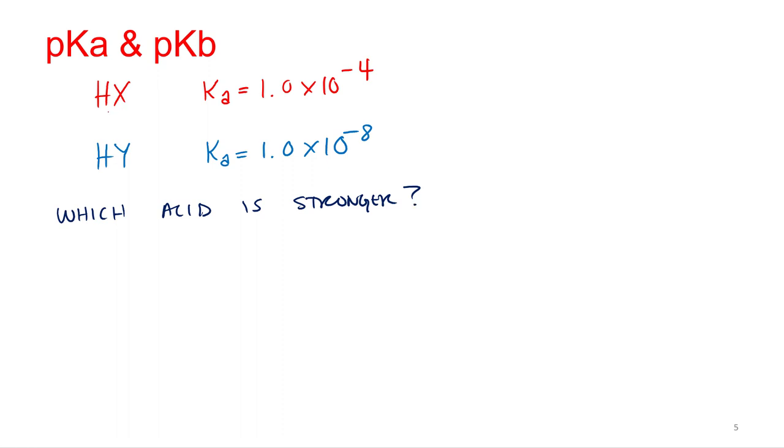And what would you say? HX. Why is HX stronger? Because it ionizes more. It ionizes more. The KA is larger, so we're going to make more products, more hydronium, stronger acid. Yes. So HX because KA is larger.